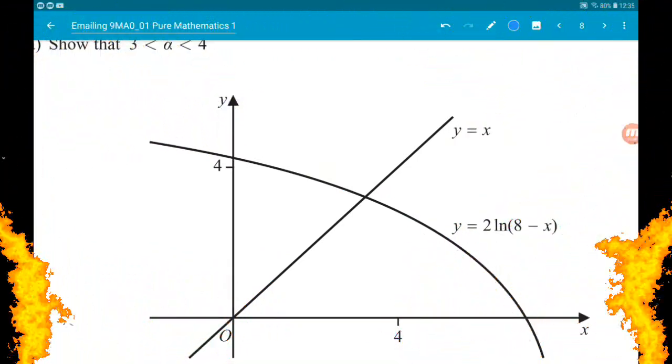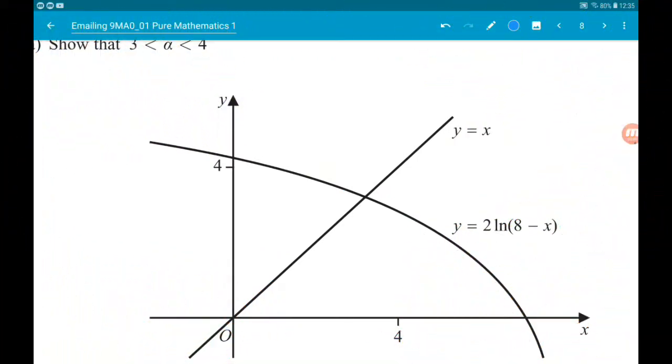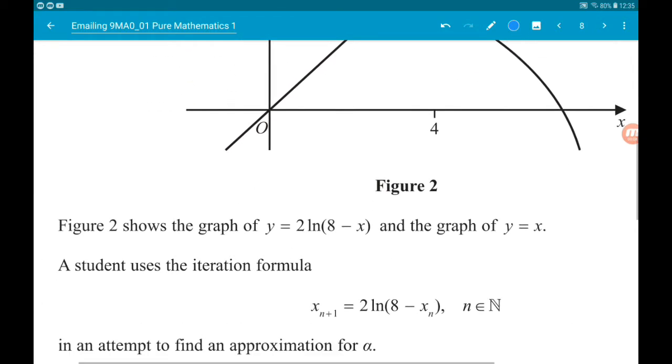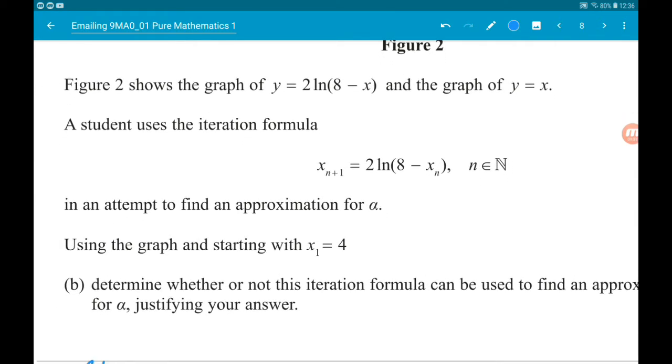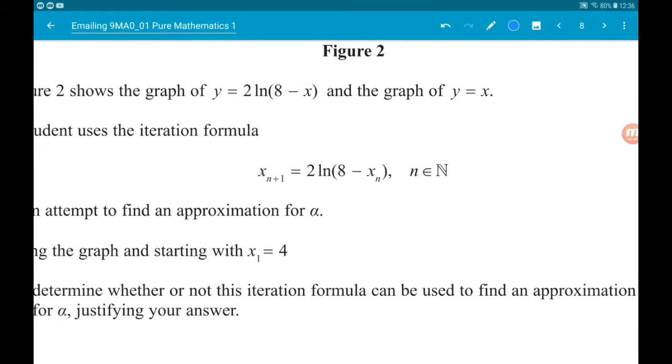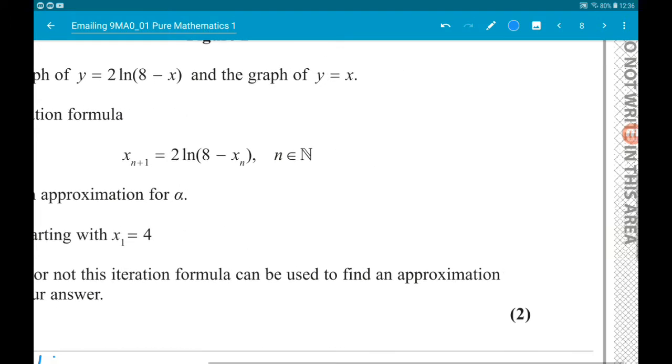Okay then for part B we are given part of the graph of both functions. We're told that a student uses the iteration formula x n plus 1 is 2 log of 8 minus x n where n is in the naturals, in an attempt to find an approximation for alpha. We are asked using the graph and starting with x1 is equal to 4 to determine whether or not this iteration formula can be used to find an approximation for alpha, justifying your answer.